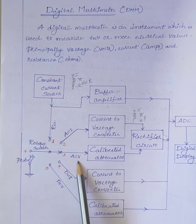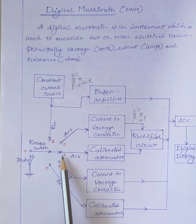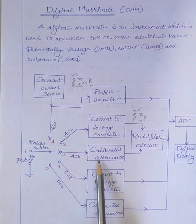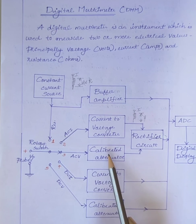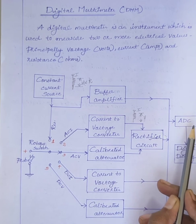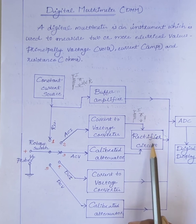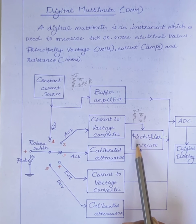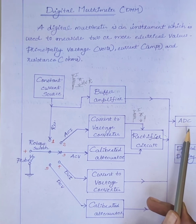Next is the measurement of AC voltage. For the measurement of AC voltage, the rotary switch is connected to terminal 3, and it is given to a calibrated attenuator. The function of the attenuator is to step down the voltage to a value suitable for the analog to digital converter. Then the output of the attenuator is given to the rectifier circuit, and the rectifier converts AC voltage to DC voltage and gives it to the analog to digital converter.